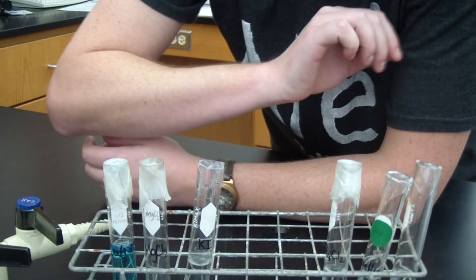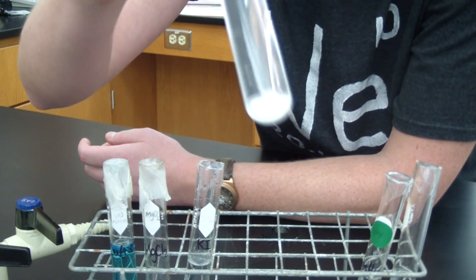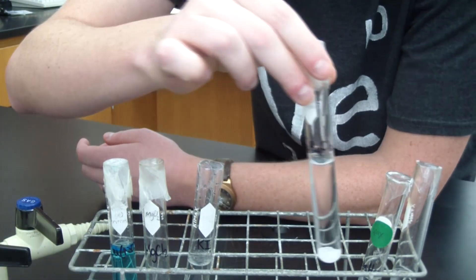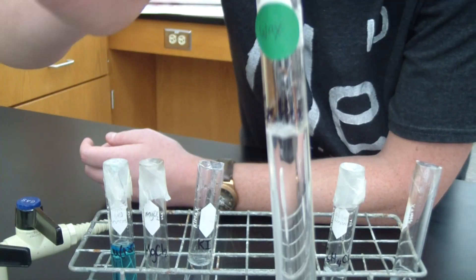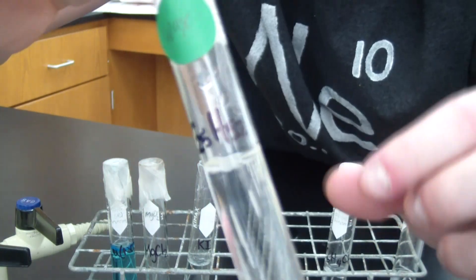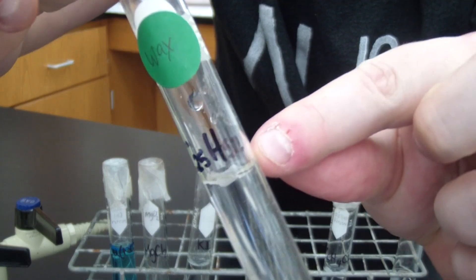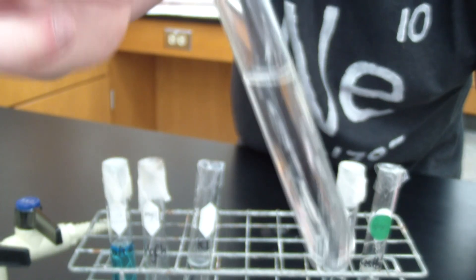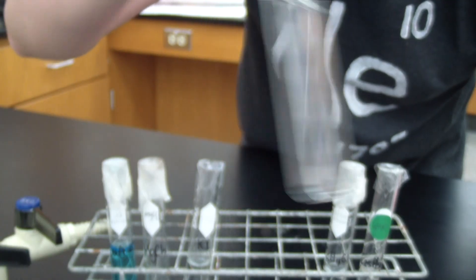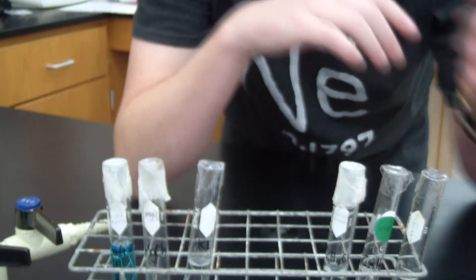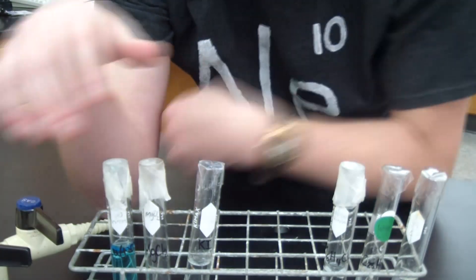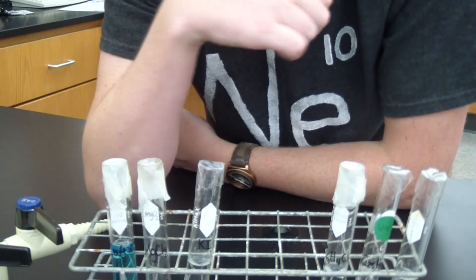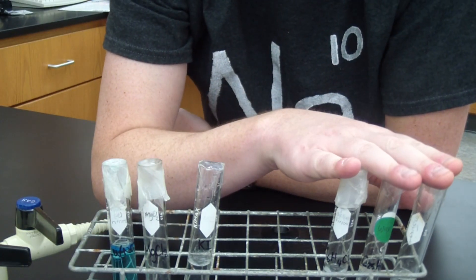Over on the other side, these are the covalent compounds. And as you can see, that one is not soluble. And this one, it's a little more difficult to see, but it's floating at the top right here, also insoluble. And this one, actually of these three, is the only one that is soluble. So as a general trend, the ionic compounds are more soluble in water than the covalent compounds.